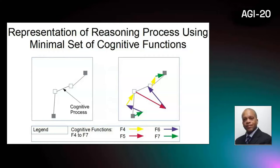Looking at the cognitive system, if all reasoning processes can be represented in this simple functional way, then by executing these reasoning processes, the cognitive system can be seen as moving through a functional state space in which each state is a concept, thereby defining a space of concepts, or conceptual space.